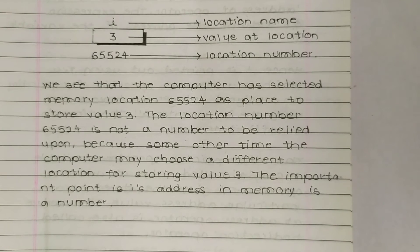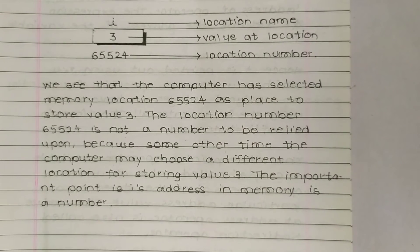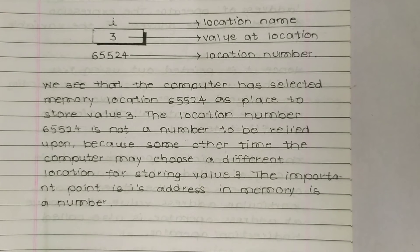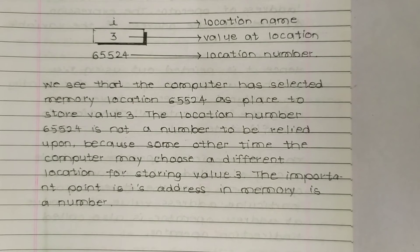This is because some other time the computer may choose a different location for storing value 3 — for example, it could be 65523 or 64523. Each time the program runs, the computer may choose a different location. The important point is that i's address in memory is a number.